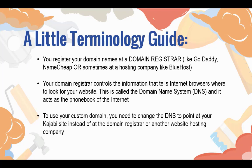They're kind of like the phone book of the internet. The system that controls this information is called the Domain Name System, or DNS. That simply means that when I open up my Chrome browser and type in www.kajabi.com, the DNS where kajabi.com is registered knows where to send me — it knows where the website files live. So to use your custom domain with your Kajabi site, you need to change that DNS to tell people to go to the Kajabi site instead.